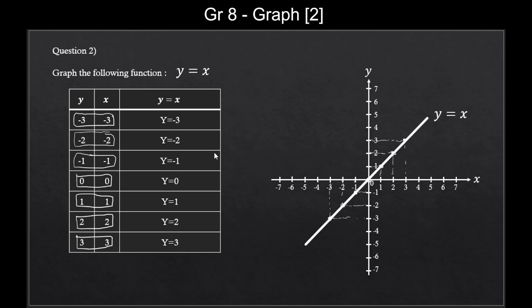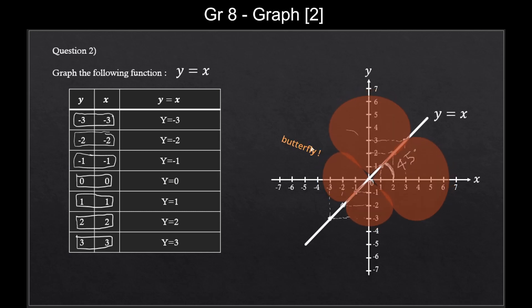Now I have one question for you. Can you guess what this angle should be? Some of you probably guessed it right. It's 45 degrees. That's because whenever x value increases by 1, y value also increases by 1. So one right, one up, one right, one up — it's very consistent. And that makes this graph look very symmetric. So this angle is 45 degrees.